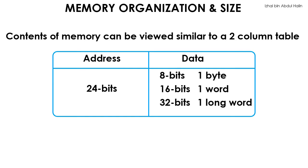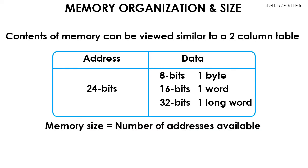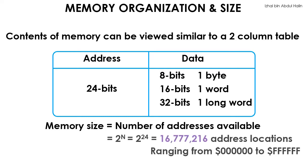The size of the memory is determined by the number of address locations the memory has. Since for the 68k microprocessor the address size is 24 bits, the size of memory is 2 to the power of 24 unique addresses — this is more than 16 million addresses in total. The address values range from $000000 to $FFFFFF. Note that a dollar sign is placed in front of the address value to signify that the number is an address; other conventions also exist, such as using the pound sign.